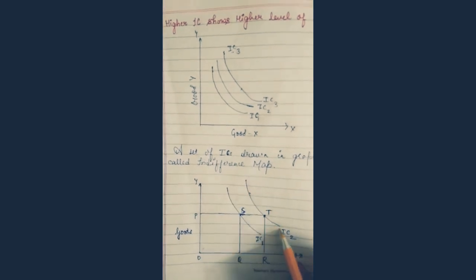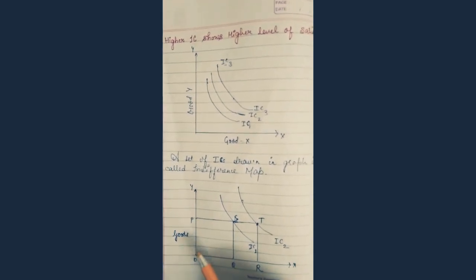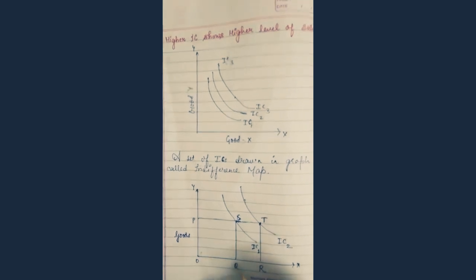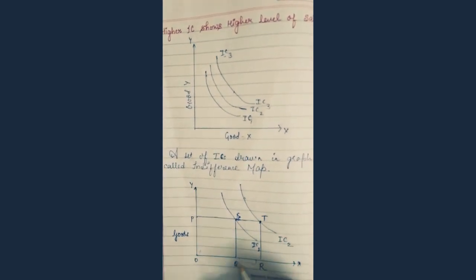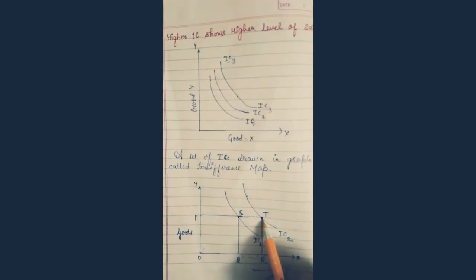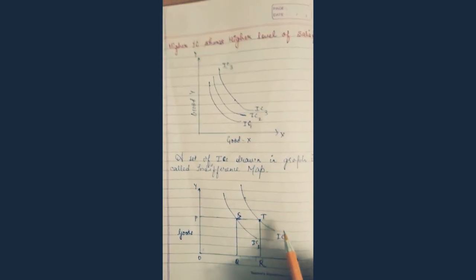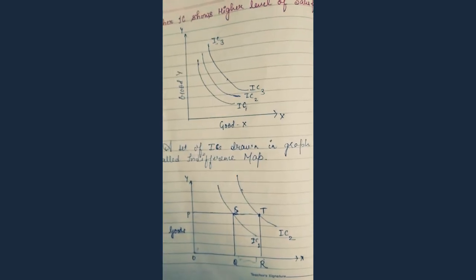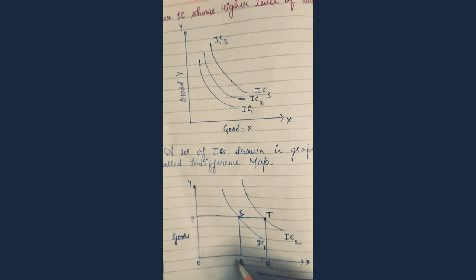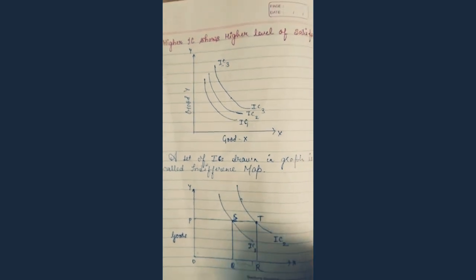At IC2, the amount of good X increases from OQ to OR — this extended amount OR is higher than OQ. Since OP is constant for both points but the amount of good X increases from OQ to OR, higher IC implies higher level of satisfaction, consistent with monotonic preference. Since OR is greater than OQ, higher IC shows higher level of satisfaction.